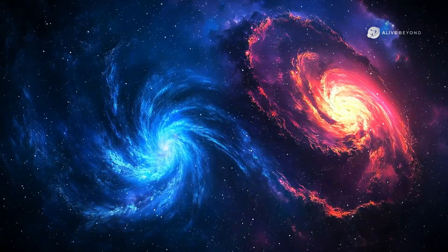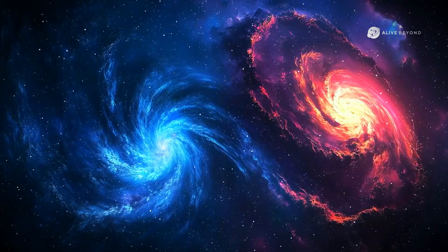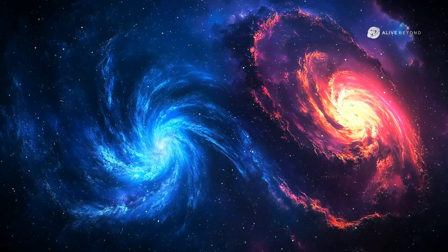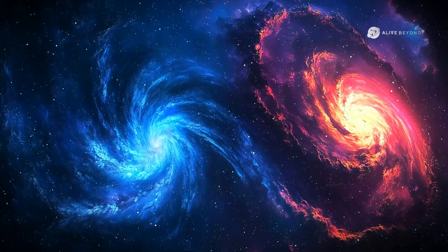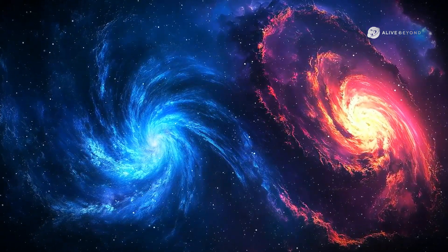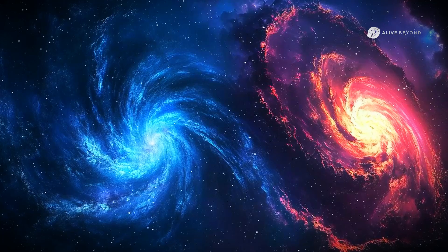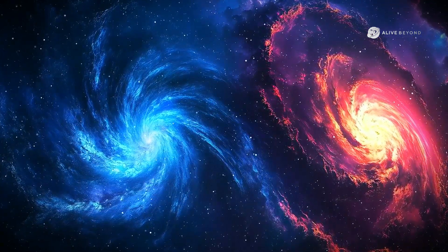As the two galaxies near each other, gravity will begin to pull at their delicate structures. The outer halos, vast, invisible cocoons of dark matter, will touch first, tugging at the orbits of stars, warping the shapes of the spiral arms.